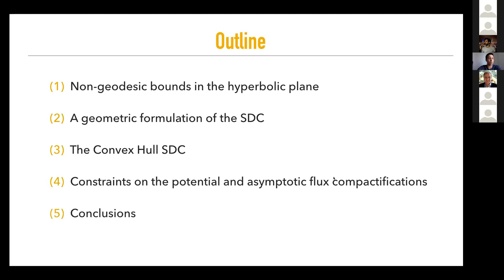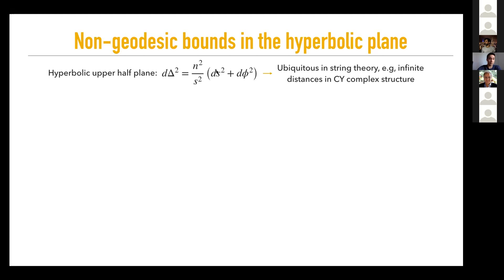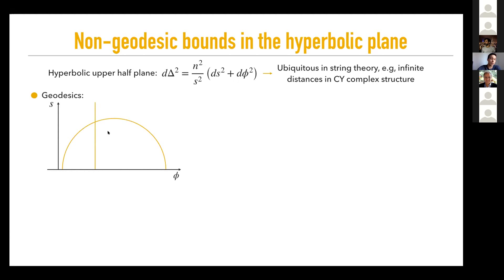Let's start with the hyperbolic plane. I consider the upper half plane with the hyperbolic metric. This is interesting because it appears in any of the string theory realizations we know for the Swampland distance conjecture, and also in the AdS/CFT ones. I'll call these the saxions and the axions as a reference to Calabi-Yau moduli space, though I'm only assuming this form of the metric. Geodesics are vertical lines or semicircumferences. To go to infinite geodesic distance, you need to take the saxion S to zero or to infinity — let's choose infinity — and the axion goes to a constant.